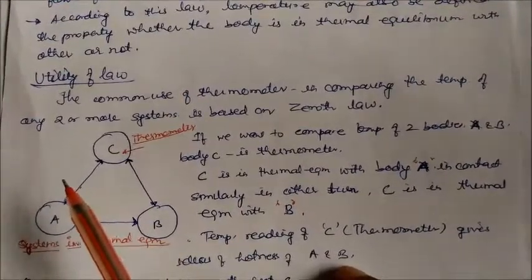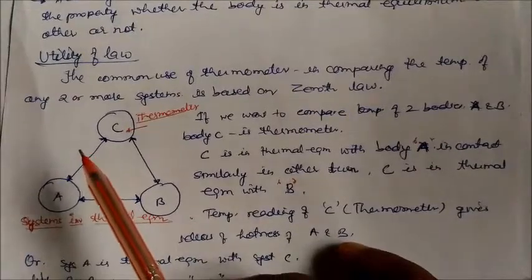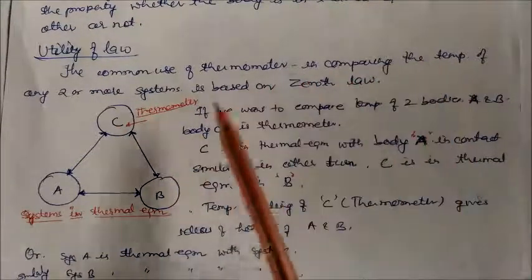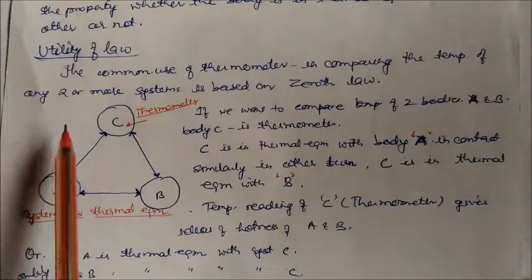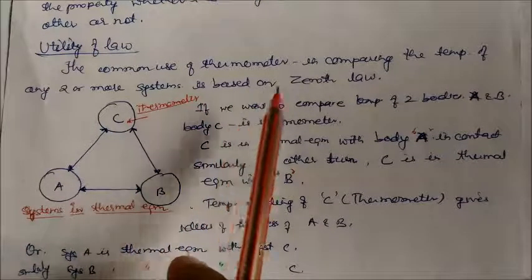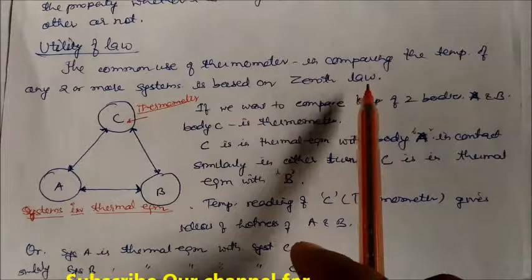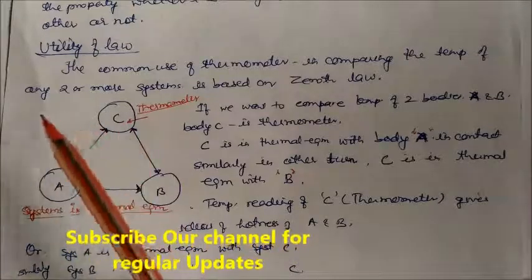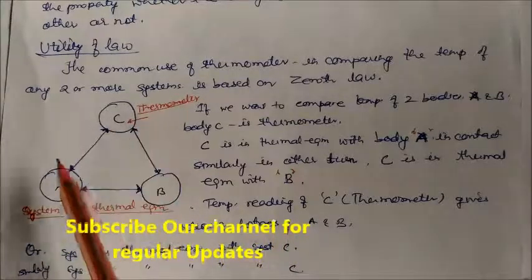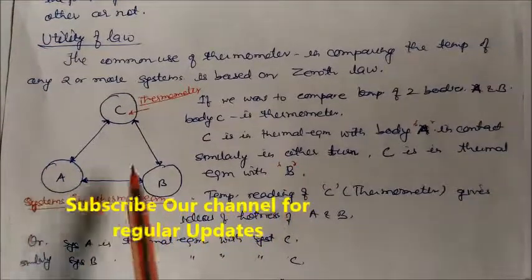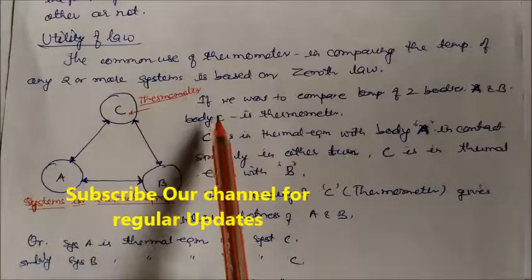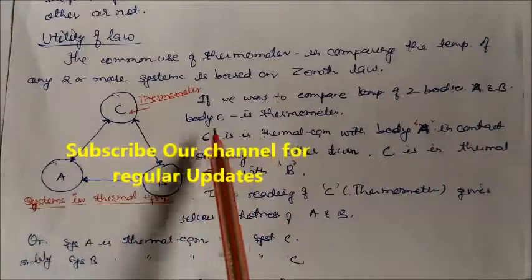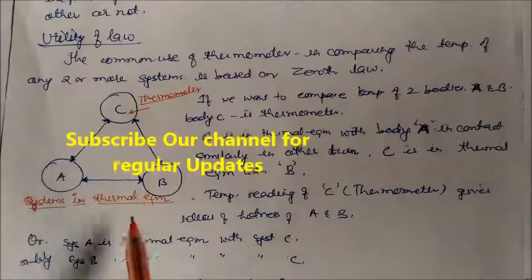The utility of the Zeroth Law is that the common use of a thermometer in comparing the temperature of any two or more systems is based on it. Here, systems A and B are the bodies being compared, and C is the thermometer. We use C to compare the temperatures of A and B.